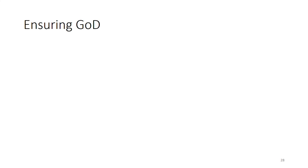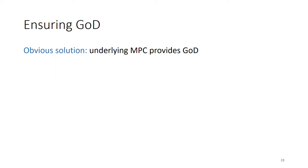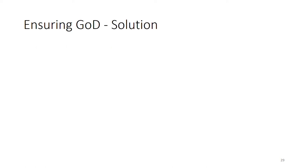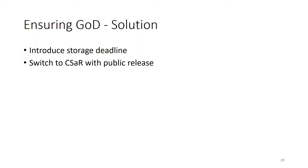Our final result is a non-interactive construction which provides the guaranteed output delivery property. It might seem like using an underlying protocol which provides guaranteed output delivery is enough to ensure that the same property holds after our non-interactive transformation. However, this is not the case. As mentioned earlier, in our original construction the CSAR release condition considers only the very first message published as the output of some round to be valid. This needs to be done to ensure that only a single wire key is revealed for each wire of each garbled circuit. Thus, a dishonest evaluator can always disrupt execution of an honest evaluator by publishing a wrong message on the bulletin board. We solve this issue by first introducing a deadline by which all garbled circuits and keys must be stored, then switching to a CSAR which releases the secrets publicly after a release condition has been satisfied.